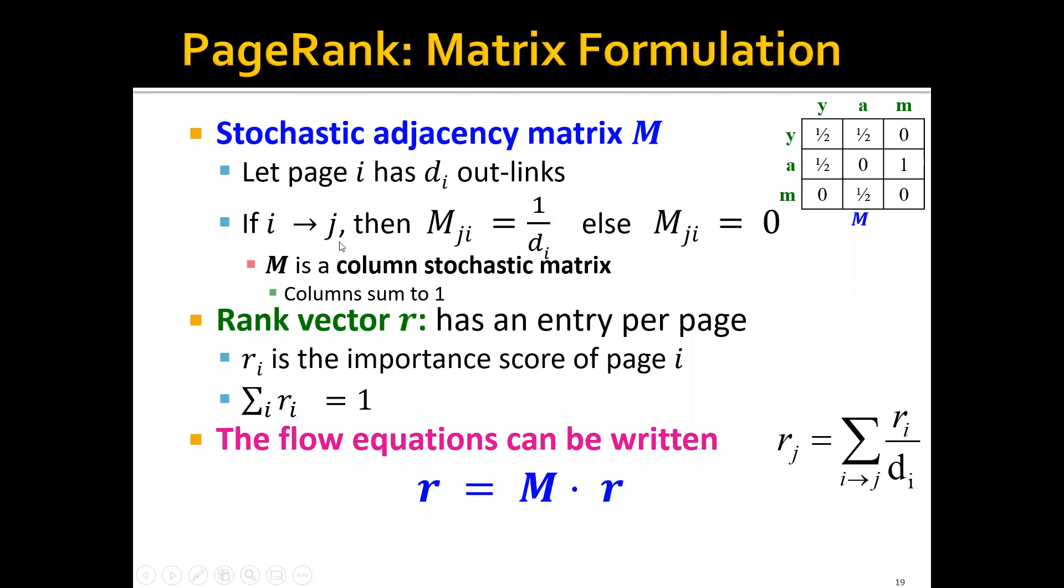If i does not link to j, then the corresponding Mji will be zero. Here M is called a column stochastic matrix because each column sums to one.